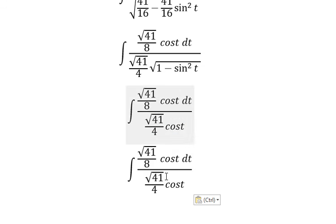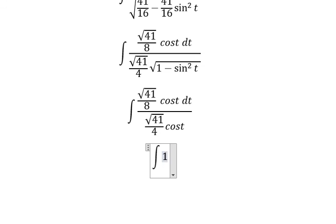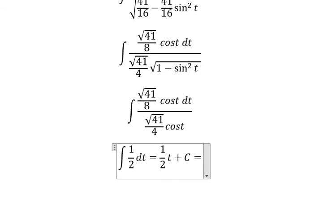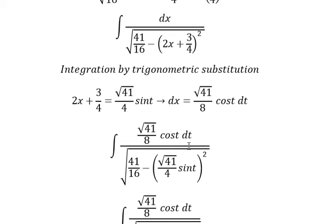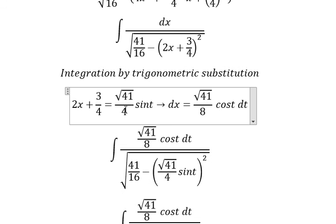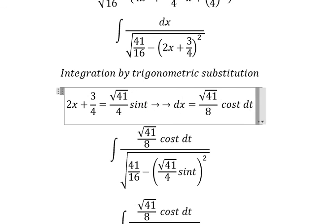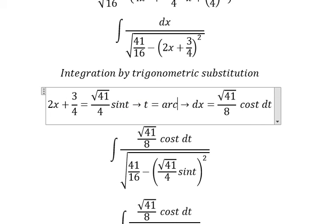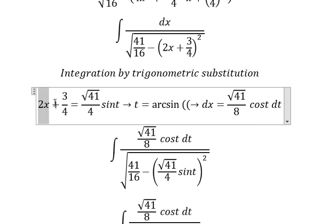Now we simplify to 1/2 dt, and we get 1/2 t plus c for t.